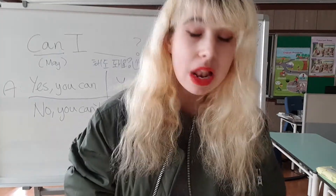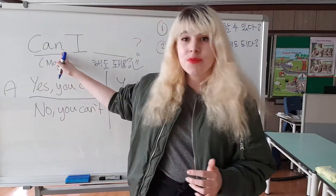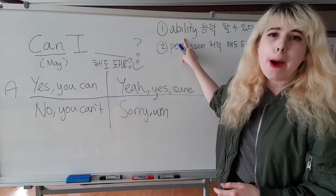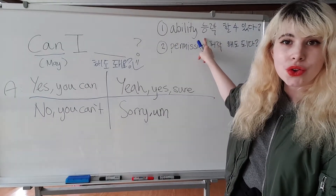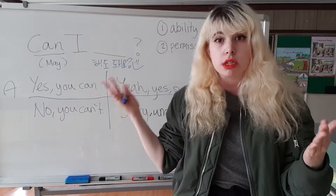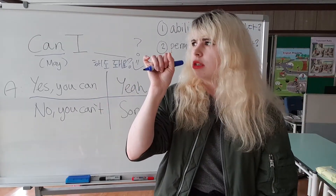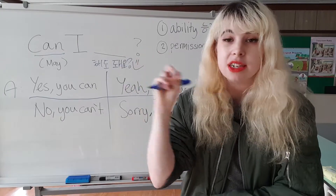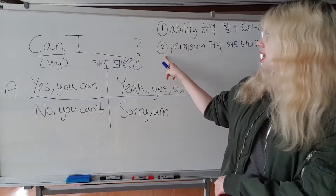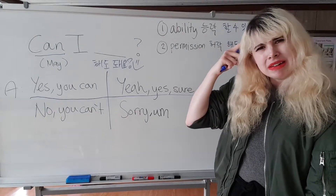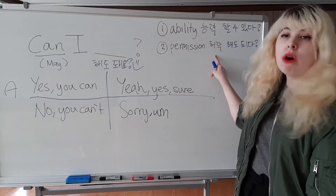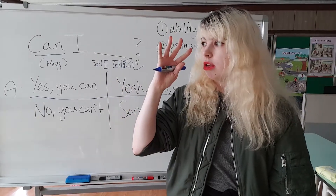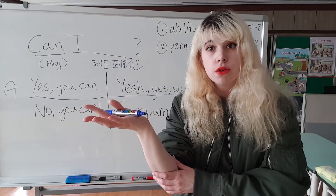This topic is all about 'can.' Can has two meanings. The first meaning is ability — 능력. 할 수 있어요? 물 마실 수 있어요? 좀 이상하죠? So there is a second meaning: permission — 허락. 해도 돼요? 물 마셔도 돼요? 펜 빌려도 돼요? Perfect.